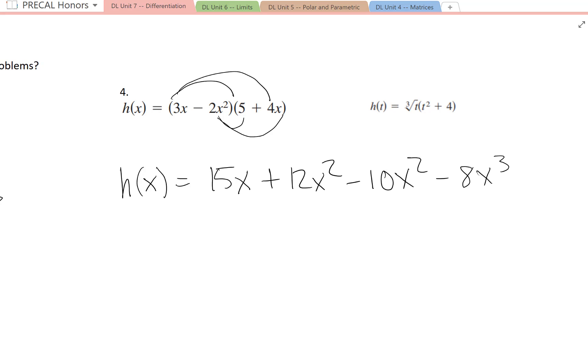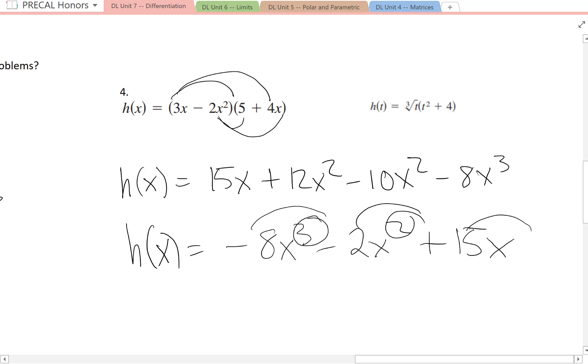Once you have this, you can combine your like terms and then use the power rule, which in my opinion is always favorable to any other type of derivation. Negative 8x cubed minus 2x squared plus 15x, and then you would just have to pop down, power down, and avoid the product rule.